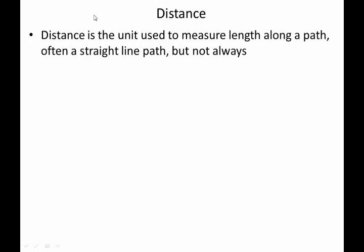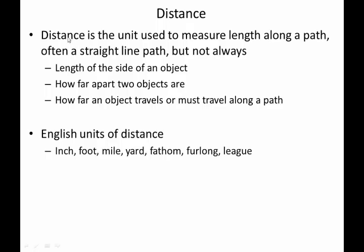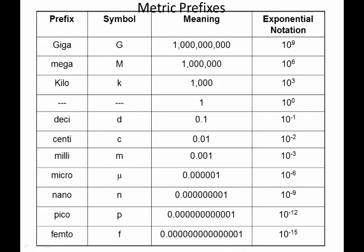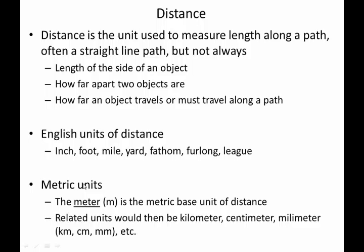So, just to kind of talk about what these units are. Distance is used to measure length along a path. It can be a straight line, but it doesn't have to be. It's just a length of the side of an object, or how far apart two things are. English units of distance you may be used to: inch, foot, mile, yard, fathom, furlong. By the way, I should say, as far as converting goes, I am not going to expect you to have memorized that one inch equals 2.54 centimeters. You don't need to know that. The only conversion factors you need to know are going to come from knowing these. This is it, as far as conversion factors go. Metric units are the meters, the basic units, so things like centimeter, kilometer, micrometer, millimeter, whatever.